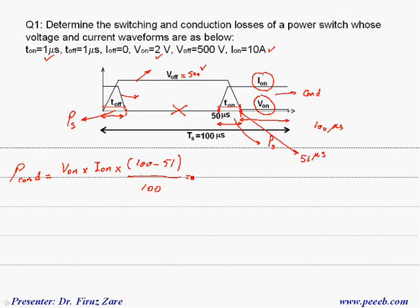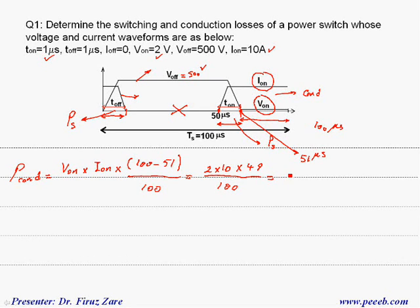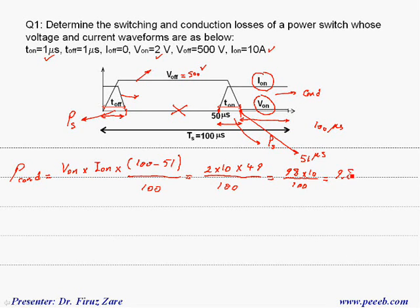So the conduction loss is 2 volts times 10 amps times 49 over 100, which is 98 times 10 over 100. The conduction loss in this case is 9.8 watts.